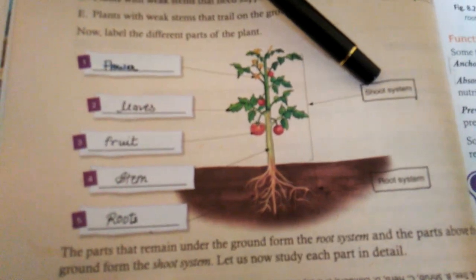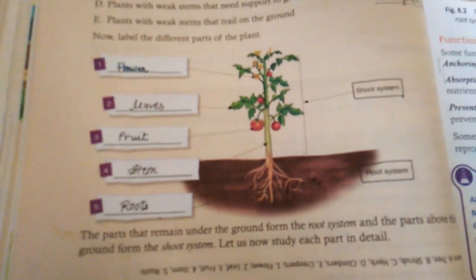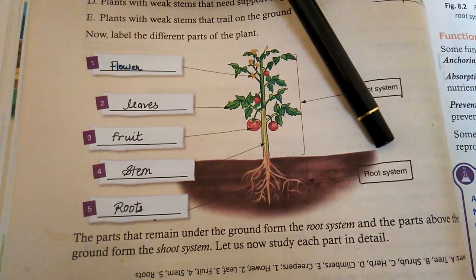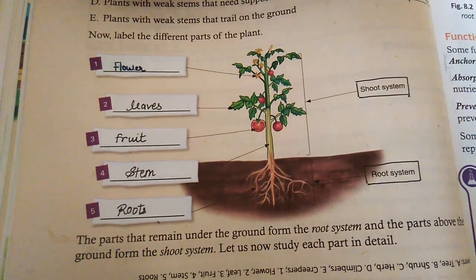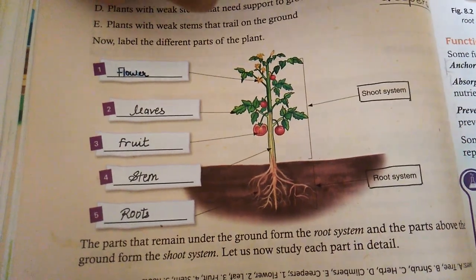The shoot system's processes occur above the ground, and the root system's processes occur below the ground.